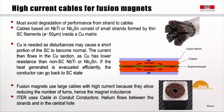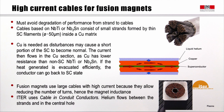In fusion magnets, very large cables carrying large currents — not just large current densities — are used, which reduces the number of turns and hence magnetic inductance. ITER uses a concept called cable-in-conduit conductor (CICC), in which helium flows both in the voids between strands and in a central hole in the conductor. The conduit around the cable, made of stainless steel, provides mechanical stability.